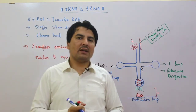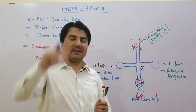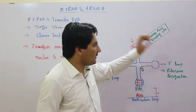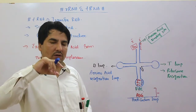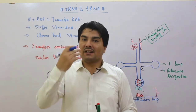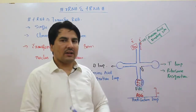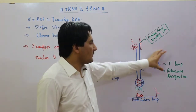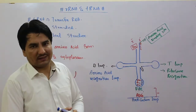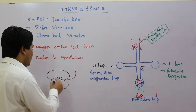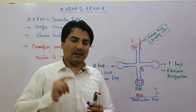Ab transfer RNA ke saath us ka jo hydroxyl group hai, us hydroxyl group ke saath amino acid bind ho gaya hai. Ab ye transfer RNA wahan se nucleus nikal kar cytoplasm mein aa jata hai. Jab cytoplasm mein aa jata hai, to jo ribosome hota hai, us ribosome ko anticodon recognize kar deta hai, aur ye ja kar anticodon bonding ho jati hai.